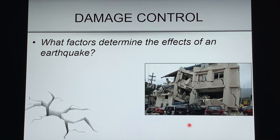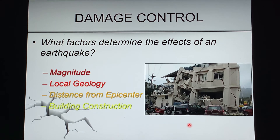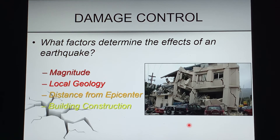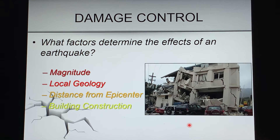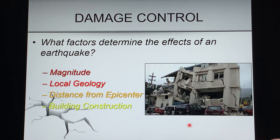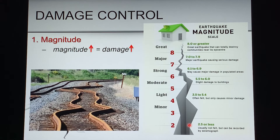What factors determine the effects of an earthquake? Four things: magnitude (or strength), geology (what the ground is made up of), distance from the epicenter, and building construction. The greater the magnitude, the greater the damage — you can see bent railroad rails from an earthquake where the ground moved back and forth, bending iron rails that didn't return to their original shape.